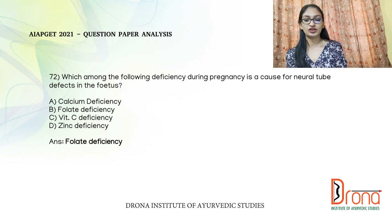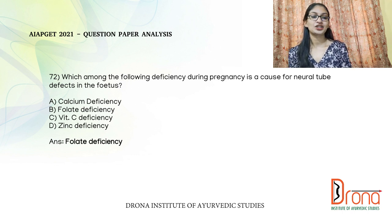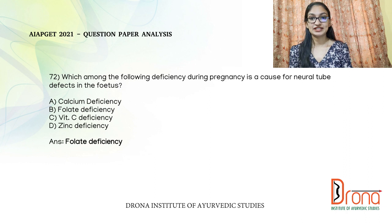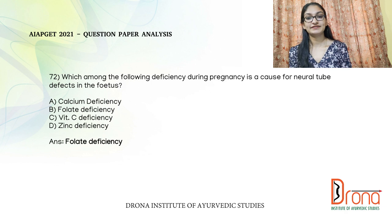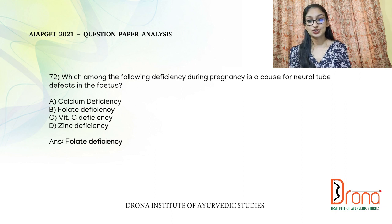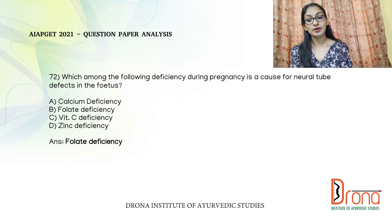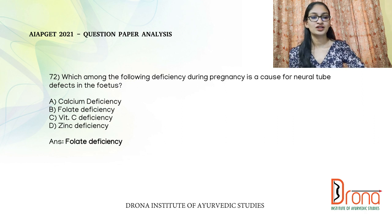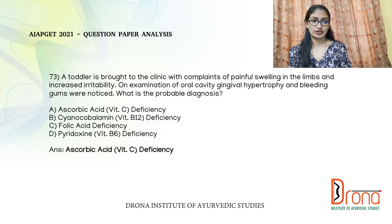The next direct question: which deficiency during pregnancy is the cause of neural tube defects in the fetus? The answer is folate deficiency. Calcium deficiency leads to risk of stunted growth and osteoporosis in the fetus. Vitamin C deficiency carries risk of pre-eclampsia and miscarriage. Zinc deficiency can cause increased fetal anomalies, congenital malformations, low birth weight, intrauterine growth retardation, and preterm delivery.